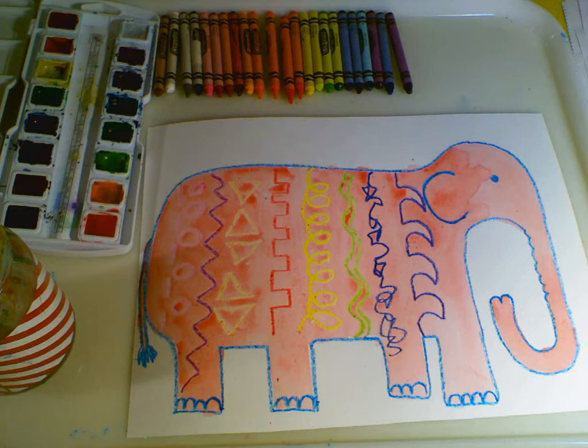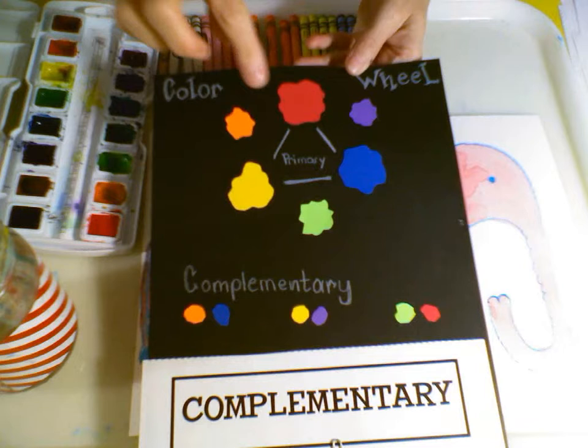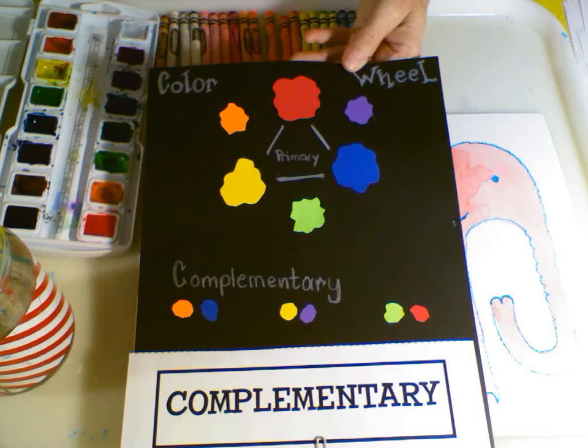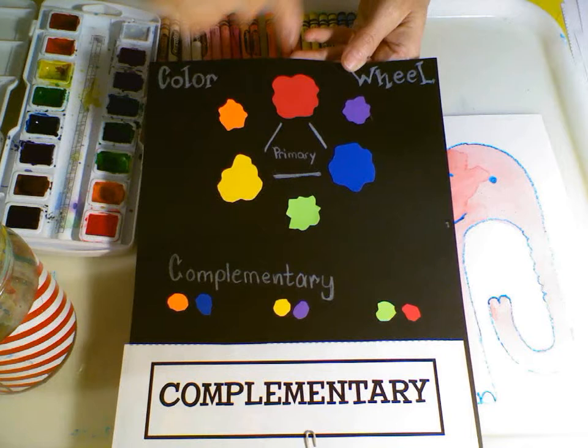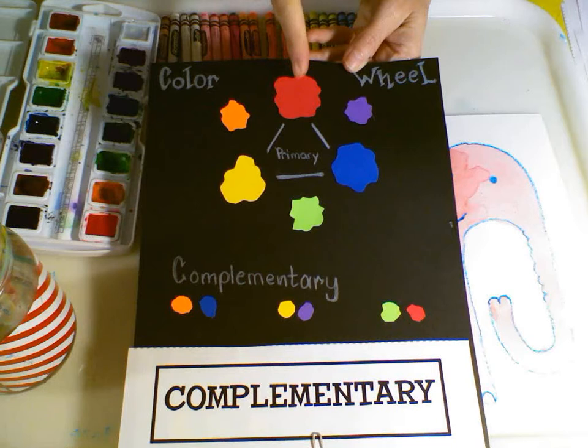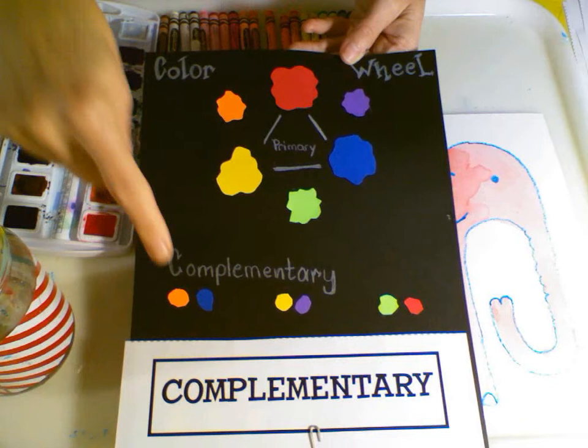Now that we're done our elephant, we're going to use what we call a complementary color. Complementary colors are colors that are across from one another on the color wheel. The color wheel is first made up of primary colors: red, yellow, and blue. Secondary colors are made when you mix two primary colors together — blue and red make purple, blue and yellow make green, and red and yellow make orange. The complement comes in when you draw a line straight across from each other on the color wheel — you get three complementary color teams: blue and orange, yellow and purple, and red and green.